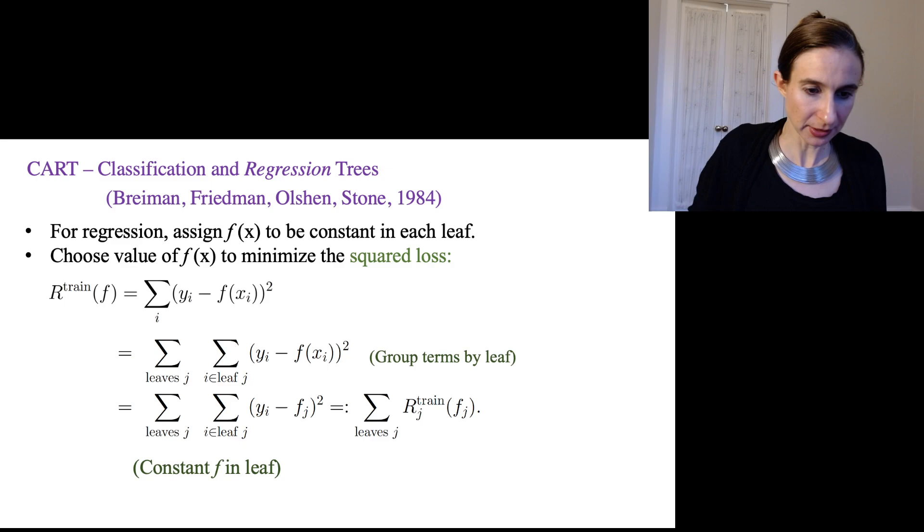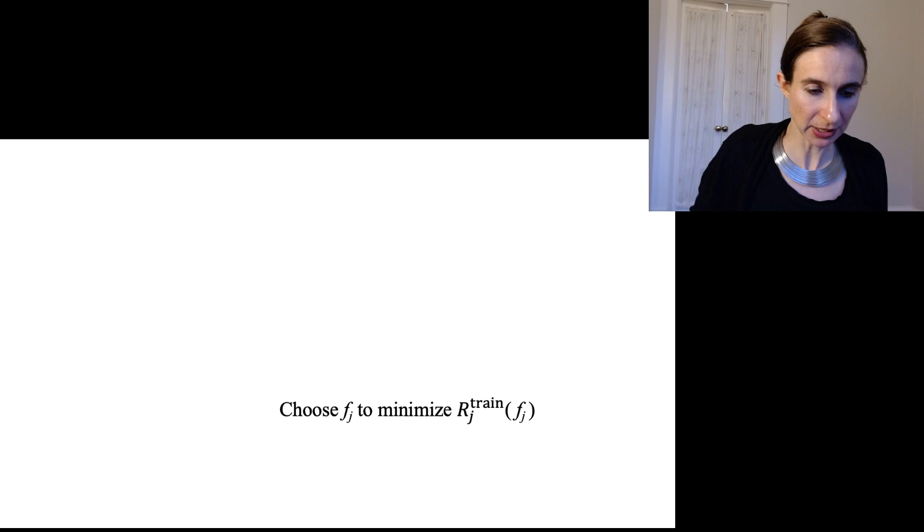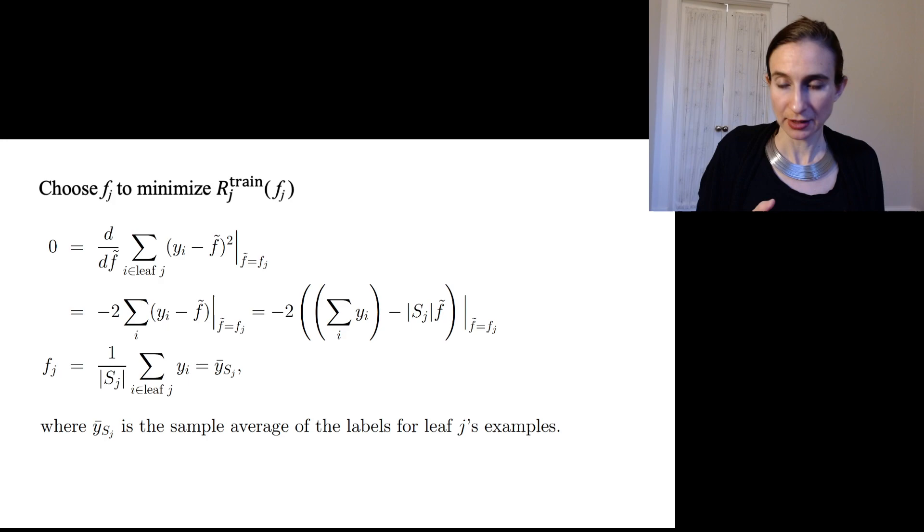And it should be just the average of the y's within that leaf. So we call this the training error in leaf j for fj. And when you choose fj to minimize this thing, you end up getting the average. And I'll just show you that computation there. You can just take the derivative, set it equal to zero. And what you end up is that fj is just the average of the y's, the average of the labels within that leaf.